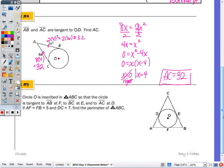Number 5: circle O is inscribed in triangle ABC, tangent to AB at F, BC at E, and AC at D. If AF = FB = 5 and DC = 7, find the perimeter of triangle ABC. From the same external point property: AF = AD = 5, BF = BE = 5, and CD = CE = 7. The perimeter has four lengths of 5 and two lengths of 7, giving 20 + 14 = 34 units.